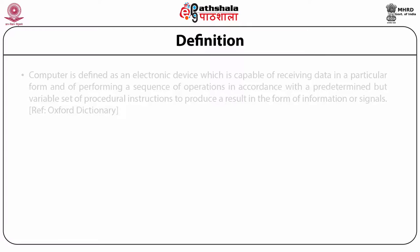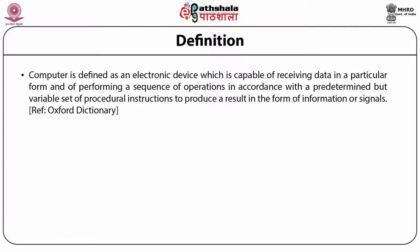Oxford Dictionary defines computer as an electronic device which is capable of receiving data in a particular form and of performing a sequence of operations in accordance with a predetermined but variable set of procedural instructions to produce a result in the form of information or signals.